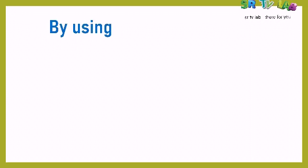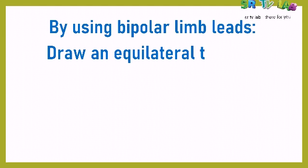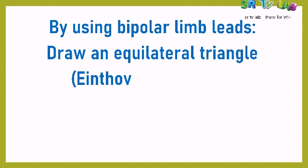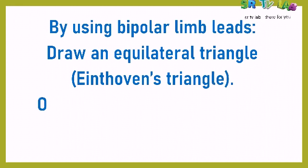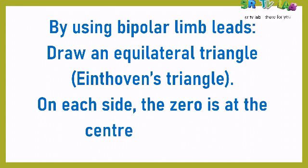Let's see how you can draw those leads, just by using bipolar limb leads. Those limb leads are lead one, lead two, and lead three. You draw an equilateral triangle — we call it Einthoven's triangle. You have drawn your Einthoven's triangle, the equilateral triangle. The next step is to put there the summation of the QRS waves.